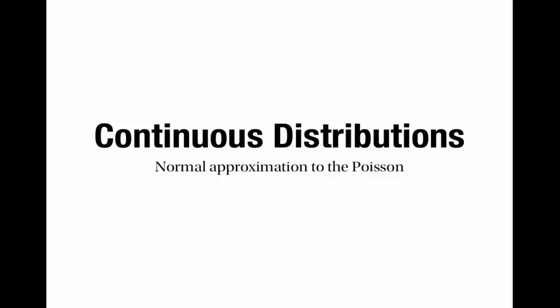This is a video about using the normal distribution to approximate the Poisson distribution. This is extremely similar to using the normal distribution to approximate the binomial distribution. I strongly recommend that you go and watch my video about the normal approximation to the binomial, which covers the theory in much more detail.